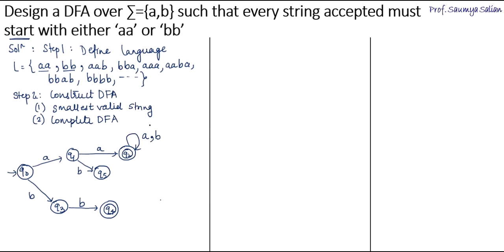Coming to q3: to reach q3 from the initial state we have input B. q3 has already responded to input B. If at q3 we get an A, it breaks the pattern of starting with BB, so this A transitions to the dead state q5. q3 is now complete, having responded to both inputs A and B.